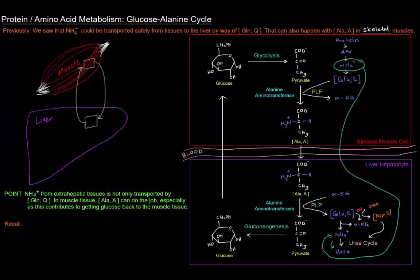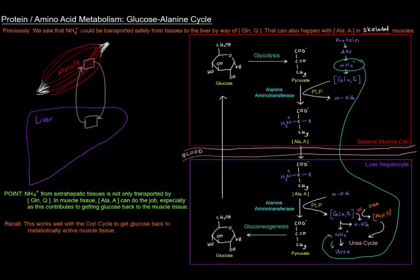Now this sort of schematic might look kind of familiar, the muscle and liver kind of with a cycle. If you recall, there is another cycle, the Cori cycle, that is a sort of similar thing. This works well with the Cori cycle to basically to get glucose back to metabolically active tissue. And we're kind of killing two birds with one stone. In addition to doing that, you're getting the nitrogen out from the skeletal muscle to the liver to be detoxified.